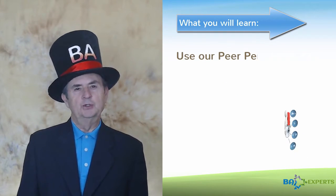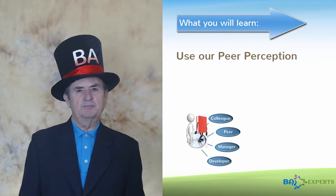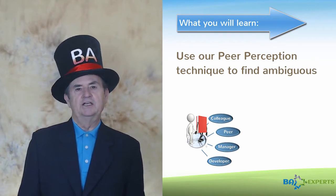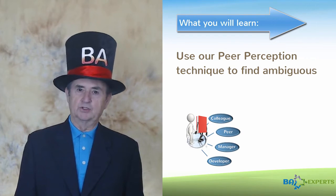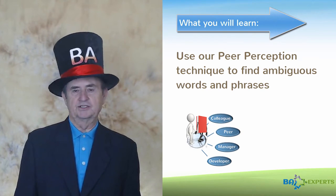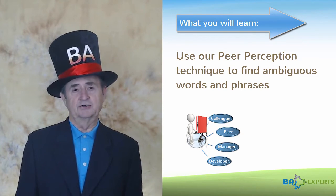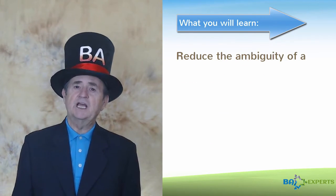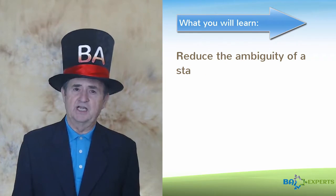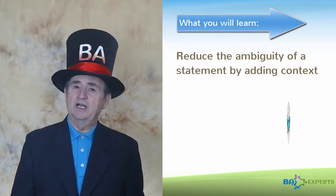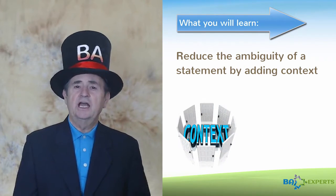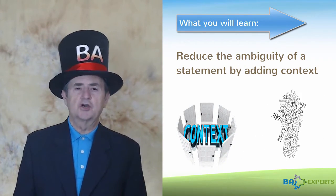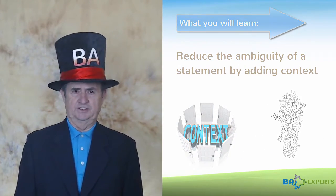You'll also learn how to use our peer perception technique to find ambiguous words and phrases that can lead to misunderstandings, and reduce the ambiguity of a statement by adding context and using standard terms and phrases.